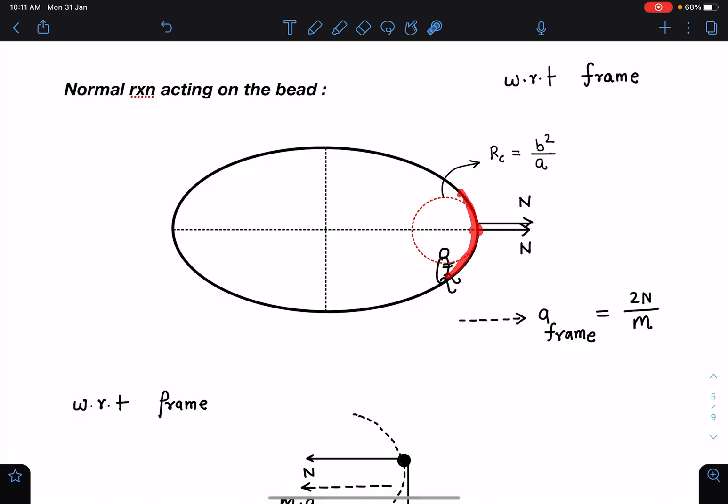Normal reaction acting on the bead I can write with respect to frame. Around this part, near this point, the particle will be doing circular motion in the radius of rc at this point, which is b square by a. This calculation I have done in many classes also, and even in the channel's videos you will see. It's a standard result; I'll request students to remember this result.